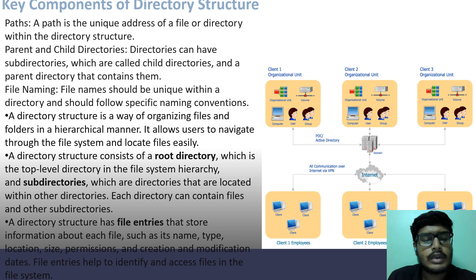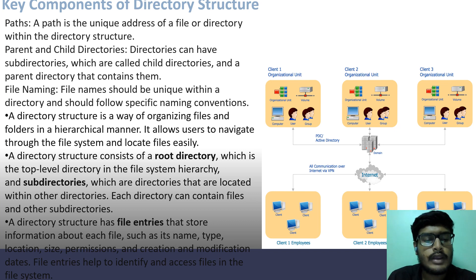A directory structure has file entries that store information about each file, such as its name, type, location, size, permission, and creation and modification date. File entries help to identify and access files in the system, as shown in the figure.